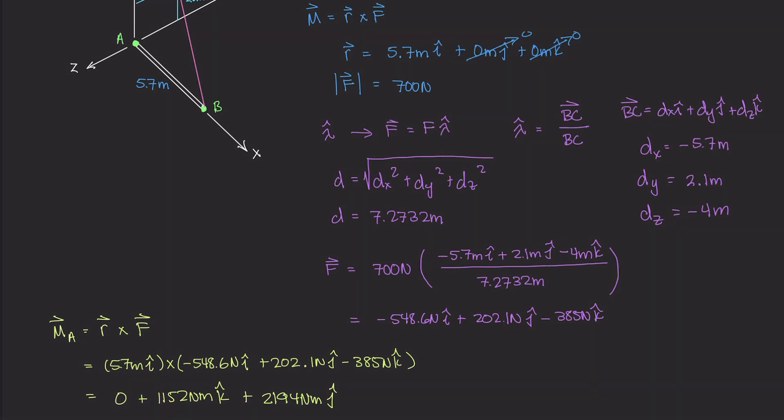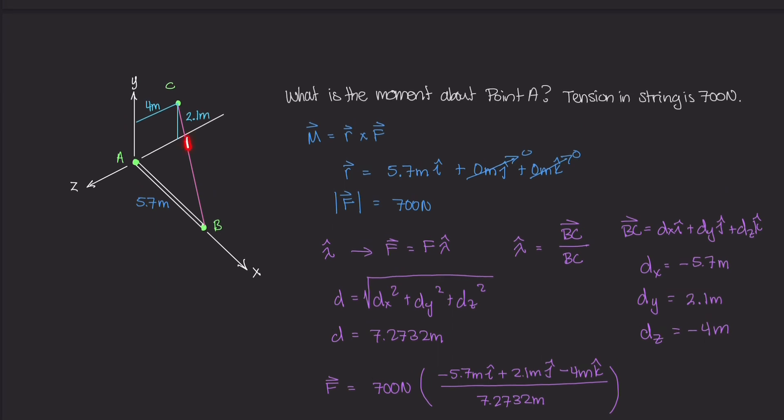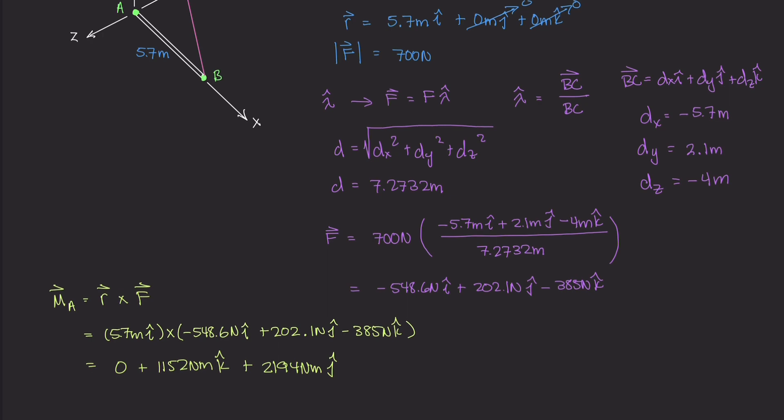So in this example, we actually ended up with a moment that had two different components, one about the k axis, and then one about the j axis. So due to this tension for this rigid body AB, our moment at point A is this value.